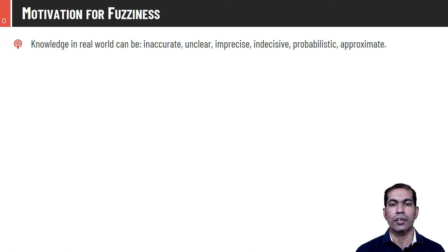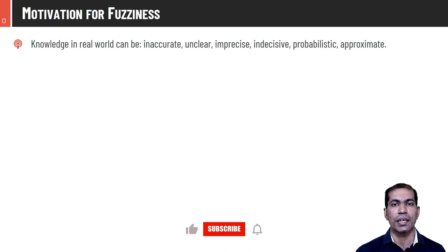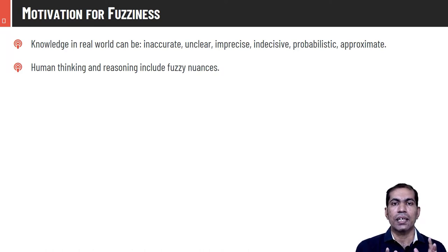Motivational factors for fuzzy logic: knowledge in the real world could be inaccurate, unclear, imprecise, indecisive, probabilistic, or approximated. Crisp logic cannot tolerate variation or imprecision in data, but fuzzy logic can nicely model that. Human thinking and reasoning also includes fuzzy nuances — doctors, for example, assess symptoms and say chances of malaria may be 70%, cold 20%, normal fever 30%, applying fuzzy logic to reach a decision.